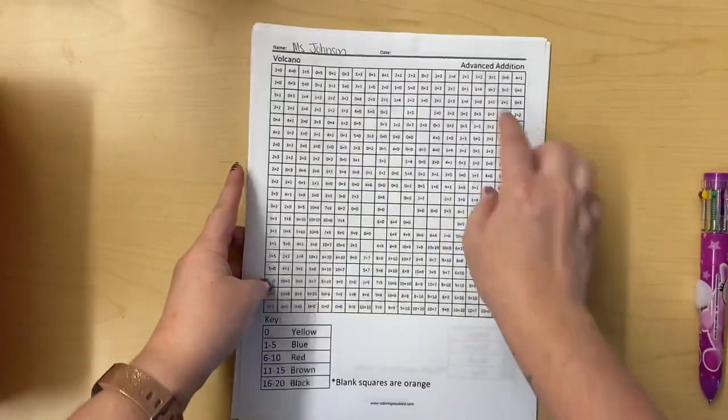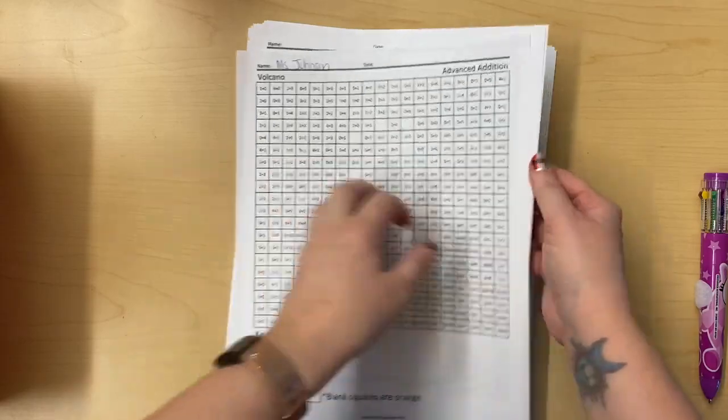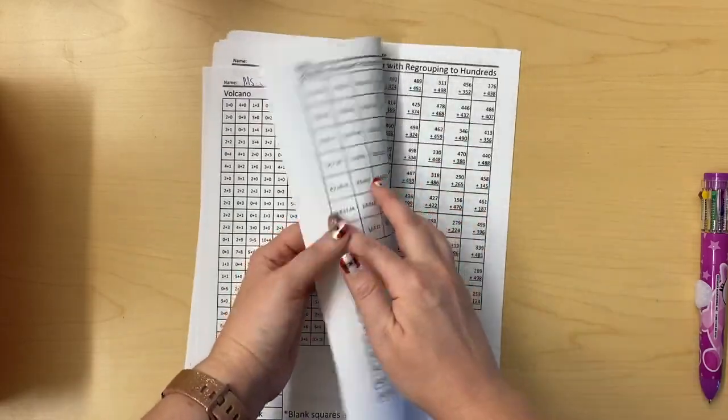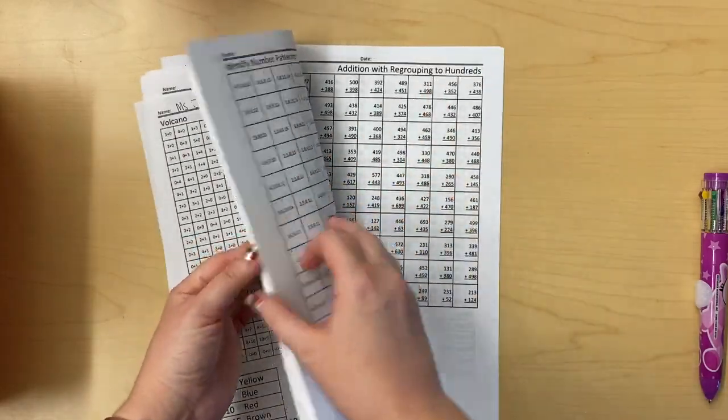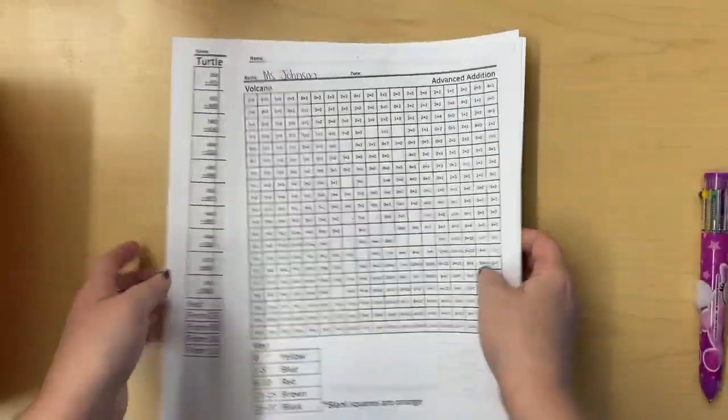It also tells you what you're gonna have to do to solve that mystery picture. So this one's all about addition. There's some addition, there's some subtraction, there's addition and subtraction with regrouping, there's also number patterns which is skip counting. So you can pick any type of skill you want to work on.